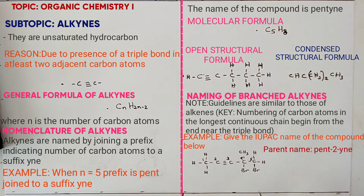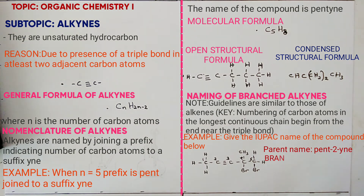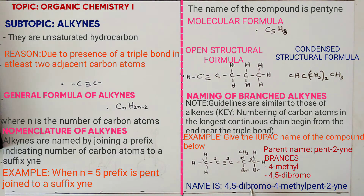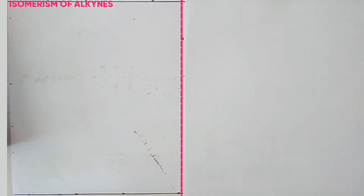Because we have 2 bromo groups, we use 'di-'. The branches are 4-methyl and 4,5-dibromo. Naming them alphabetically, starting with bromo: the full IUPAC name of this compound is 4,5-dibromo-4-methylpent-2-yne.